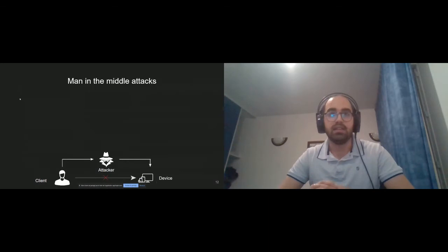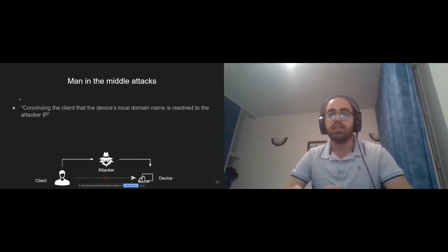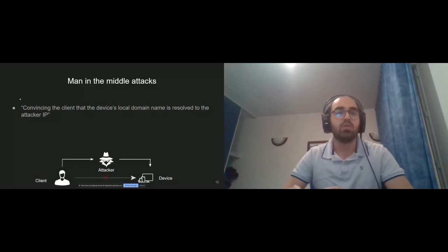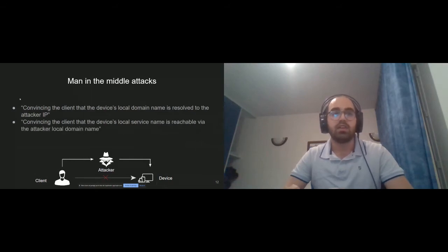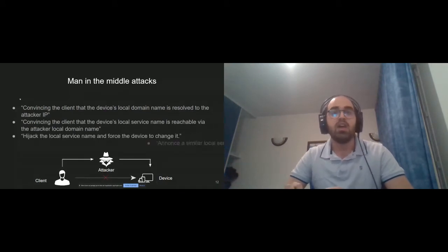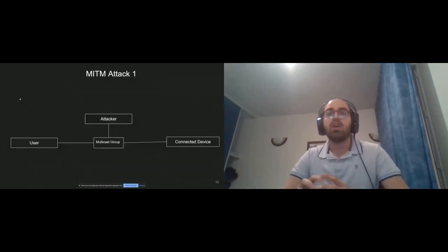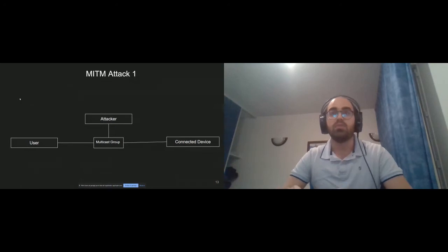During our experiments we designed four different attack scenarios — three technical ones and one social engineering attack. The first technical attack is convincing the client that the device's local domain name resolves to the attacker's IP. The second is convincing the client that the device's local service name is reachable via the attacker's local domain name. The third is hijacking the local service name and forcing the device to change it. The social engineering attack is announcing a similar local service name and baiting the client into picking it.